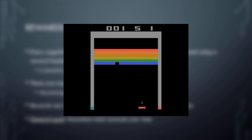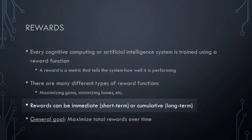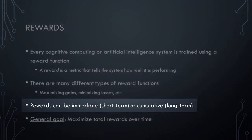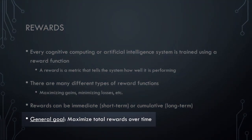For instance, consider this example of a reinforcement learning system figuring out how to play the classic Atari game Breakout. Several different reward structures are possible here — one of which might be: earn as many points as possible, while another might be: stay alive as long as possible. Note that the term reward can be applied to both immediate, short-term rewards and cumulative, long-term rewards. It is often the case that an AI system must learn to forgo immediate rewards, or even accept immediate losses, in order to maximize its cumulative, long-term rewards. The general goal of such systems is to maximize their total accumulated rewards over time.